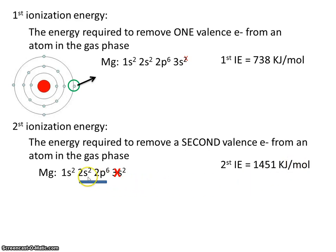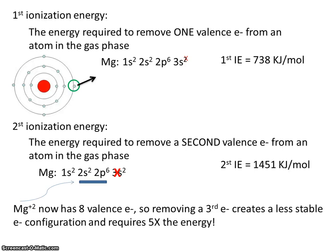But look what happens. Now the valence energy level is energy level 2. And you can see that we have 2 plus 6. So that's a total of 8 valence electrons. That makes magnesium have a stable electron configuration. Anytime there's 8 valence electrons, that's desirable or energetically favorable for the atom. Magnesium plus 2 now has 8 valence electrons. Removing a third electron creates a less stable electron configuration and surprisingly requires 5 times more of the energy.